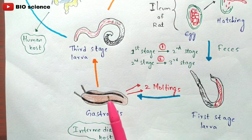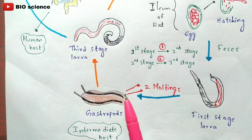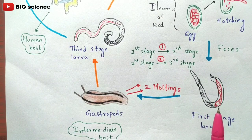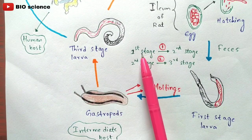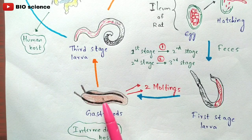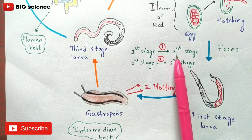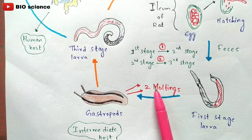These first stage larvae are consumed by gastropods — for example, snails. The gastropods feed upon fecal material, which contains the first stage larvae of Angiostrongylus costaricensis. Once inside the gut of the gastropod, the larvae undergo two moltings: the first molting converts first stage larvae to second stage larvae, and the second molting converts second stage larvae to third stage larvae.